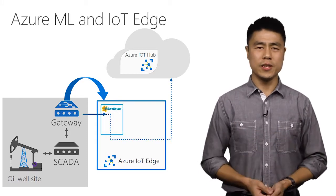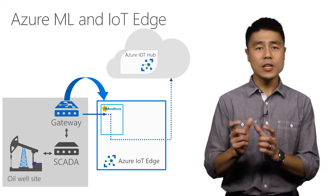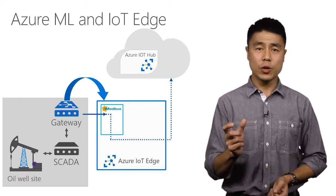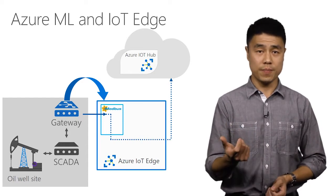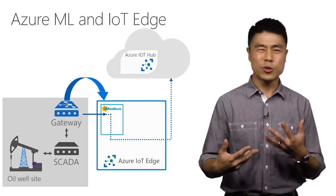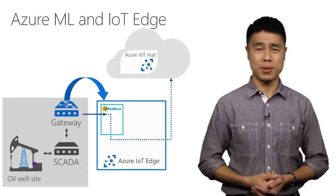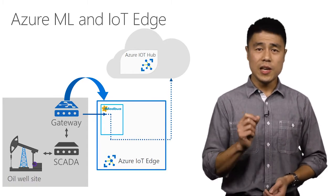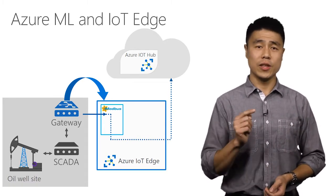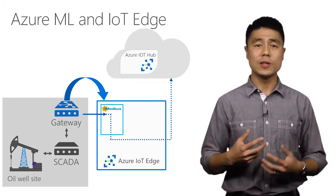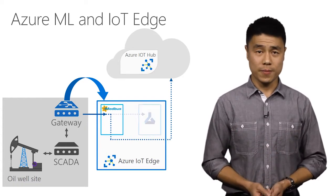A traditional IoT scenario would look like this. An edge module has been created that can collect the data from the Schneider Electric system — in technical terms, it's collecting Dynacard data from the RTU over Modbus. If the IoT Edge device is connected to the Internet, this module can send data to Azure for remote monitoring.